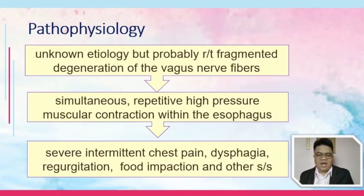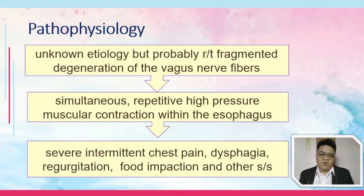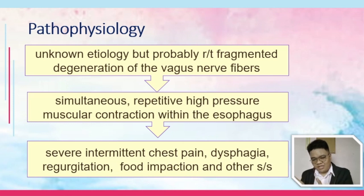For the pathophysiology of diffuse esophageal spasm, this is idiopathic but related to fragmented degeneration of the vagus nerve fibers. As the patient ages, there is degeneration of the nerve. The vagus nerve is the parasympathetic stimulator of our GI tract, especially the stomach and esophagus. If there is fragmented degeneration — meaning one part of the vagus nerve degenerates first, then another part later — it may cause involuntary contractions.